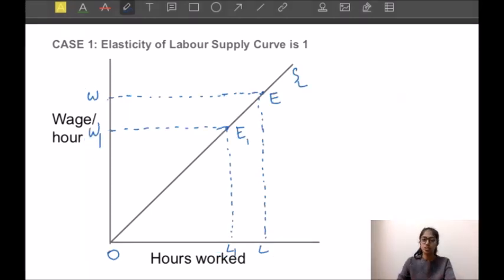Now the worker works for L1 hours. At this L1 hours he still gets the wages equal to OW from the employer, that was the earlier wage rate, but has to pay WW1 as tax to the government. Hence his net wage reduces to OW1 per hour.